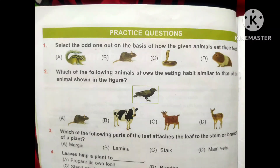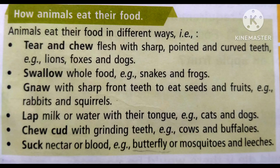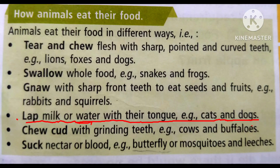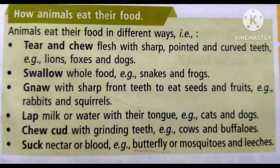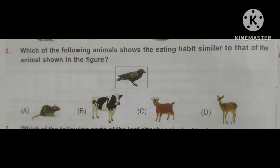Here friends, I have given a list of how animals eat their food. You can take a screenshot. Some animals lap their food, like cat and dog. Some animals chew cud with grinding teeth, for example cow and buffalo. Some animals suck nectar, like butterfly.